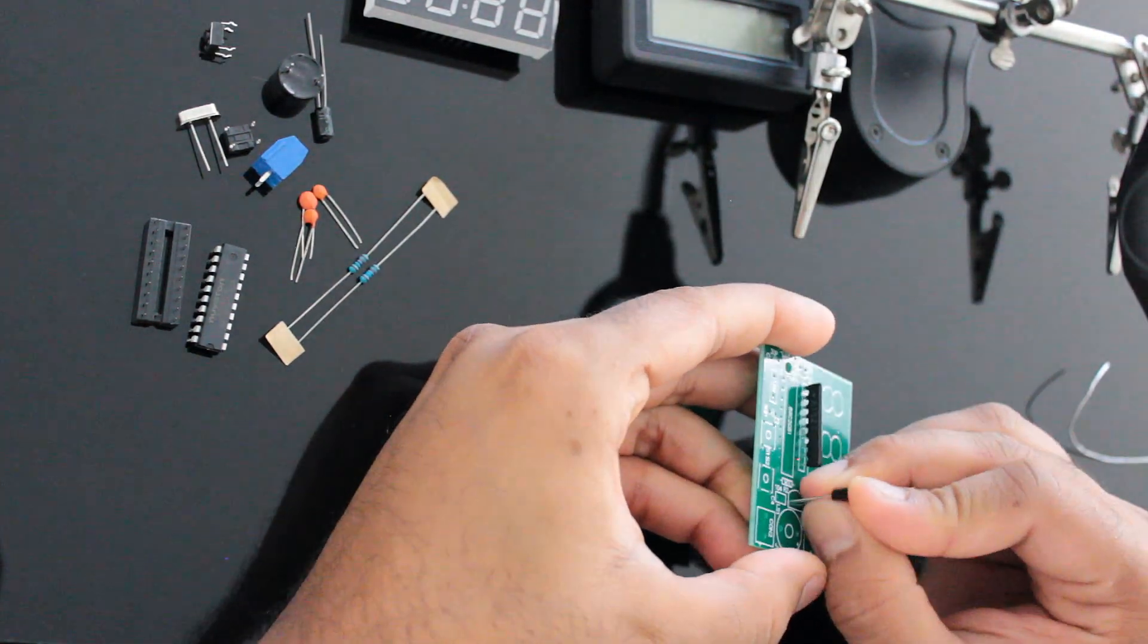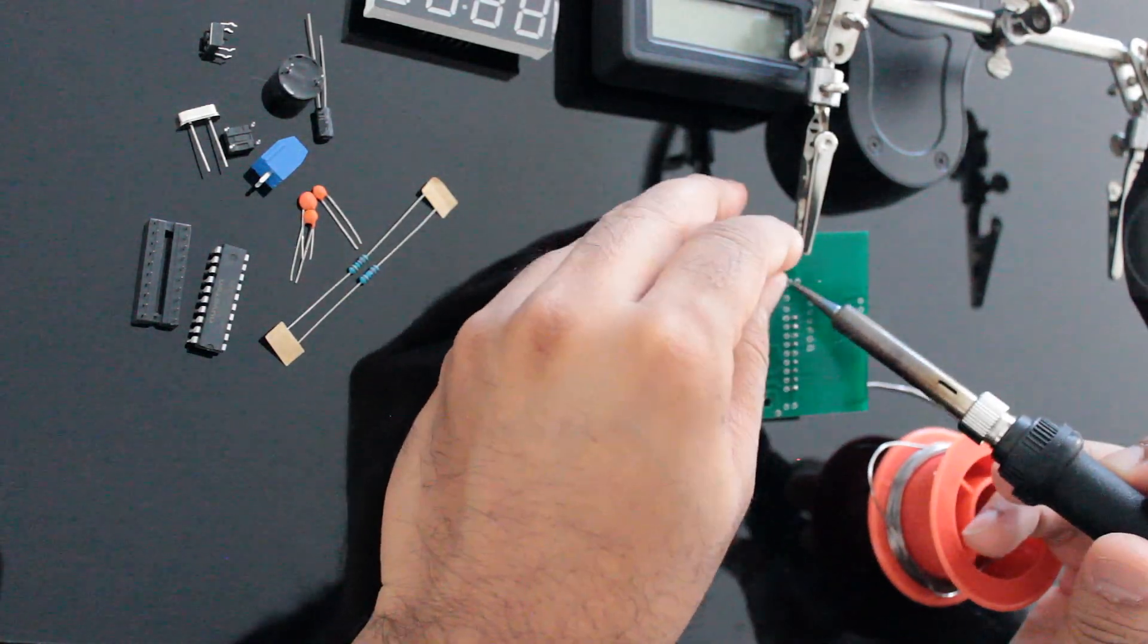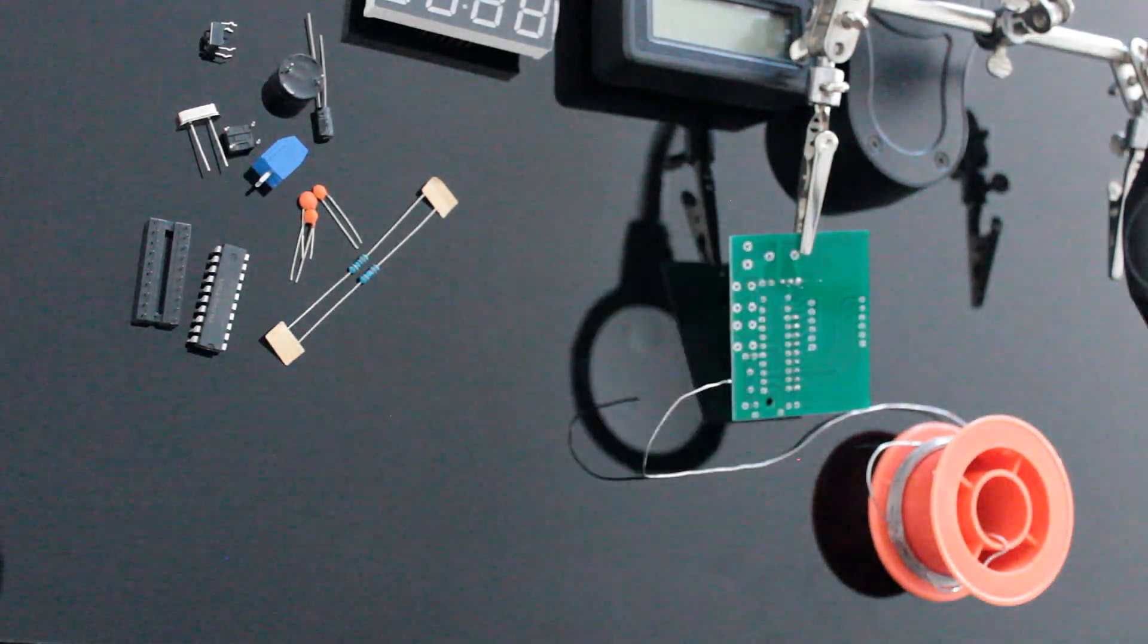After that I'm soldering the 8550 PNP transistor to the board. Just match the D of the transistor to the D drawn on the board and you'll never get it wrong.